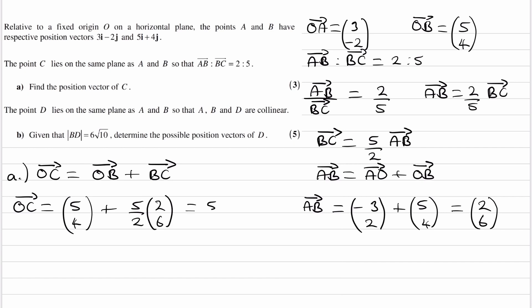This is then (5, 4) plus, so 5/2 times 2 would be 5 and 5/2 times 6 would be 15. So then we end up with OC being equal to, add these two things up, (10, 19).